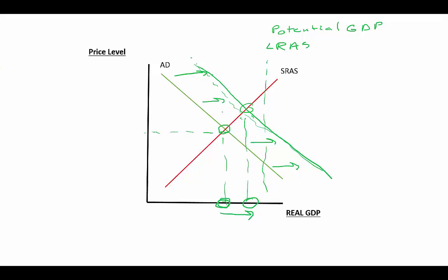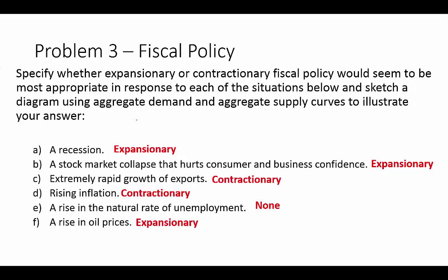Our price level will also increase, but when equilibrium is well to the left of long-run aggregate supply or potential GDP, that inflationary pressure is minimal — something we don't have to worry about as much as getting growth happening and shifting aggregate demand. This expansionary model applies to both scenario A and scenario B.